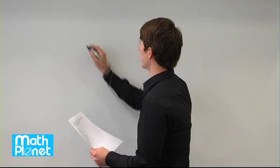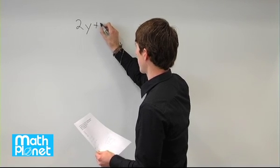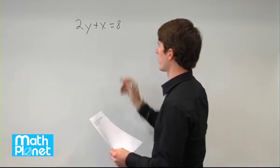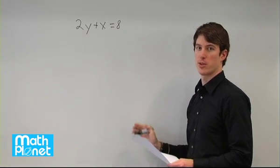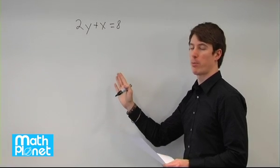Our original line is written as 2y plus x equals 8. So our new line is perpendicular to this. We want to write this in the slope-intercept form so that we can find the slope of the new line.